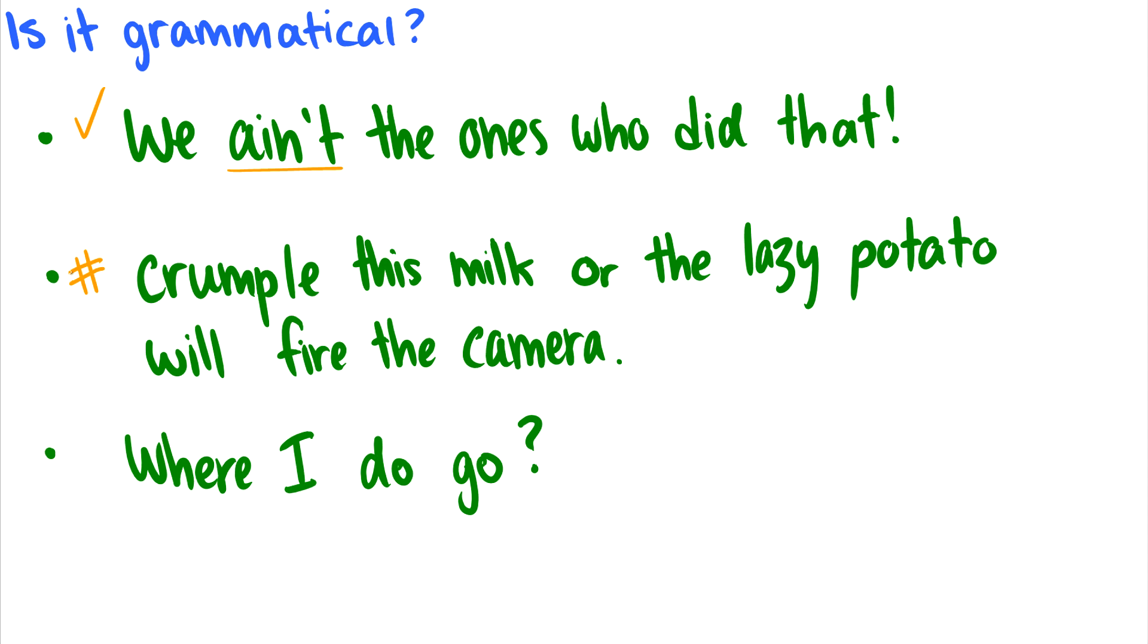Now let's compare this to sentence three, where I do go. This is bad. We put an asterisk by it to signal that it's bad. It's grammatically bad because this I should actually be in this position between do and go. So it should be where do I go, not where I do go. So this is a word order difference and this is ungrammatical. Okay, we'll see more examples of ungrammatical sentences as we go on.